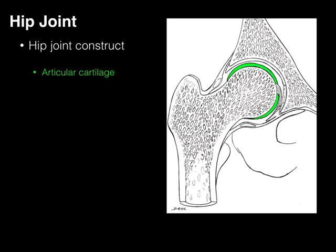The acetabular labrum helps to increase the concavity and geography of the socket to provide more stability. Surrounding the head of the femur is articular cartilage — hyaline cartilage — that helps to absorb shock. The joint cavity is filled with synovial fluid that lubricates and guides the hip joint. The round ligament from the fovea of the femoral head, also called the ligamentum teres, provides support especially when the hip is flexed and laterally rotated, though it becomes less significant as we age.